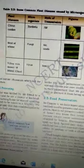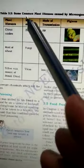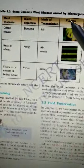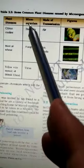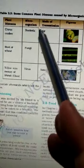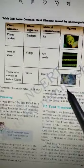Students, you can see here the table 2.2. In this table are some common plant diseases caused by microorganisms. Here is the first column: plant diseases. Second is microorganism. Third is mode of transmission. And next is the figure.